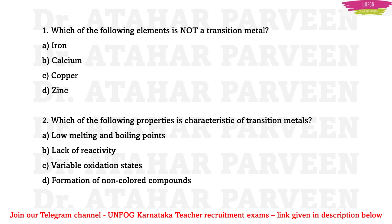MCQ 1: Which of the following elements is not a transition metal? Options: iron, calcium, copper, zinc. Calcium is not a transition metal — iron, copper, and zinc are. You should know the names of elements belonging to transition elements and inner transition elements, at least having a rough idea of which element belongs to which group.